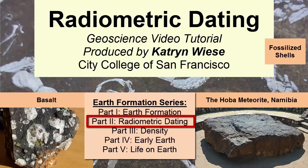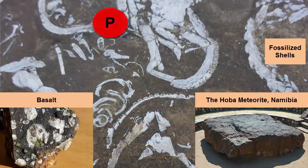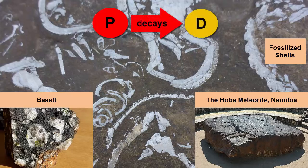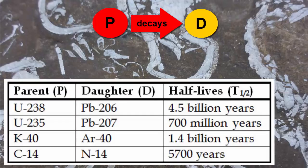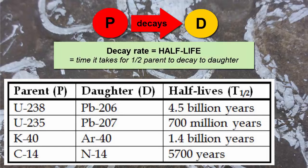First step: we need to identify a radioactive parent material that is present in our rock and that decays into daughter material at a rate that ensures enough of both parent and daughter in the rock to measure them. There are a number of parent-daughter radioactive decay pairs, and each pair has a different decay rate known as a half-life. Half-life is the amount of time it takes for one half of the original parent radioactive material to decay into daughter product.